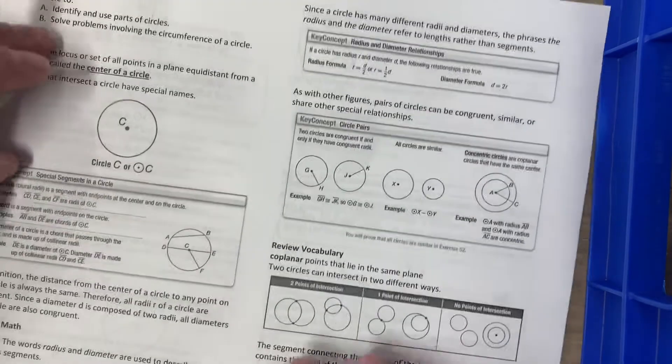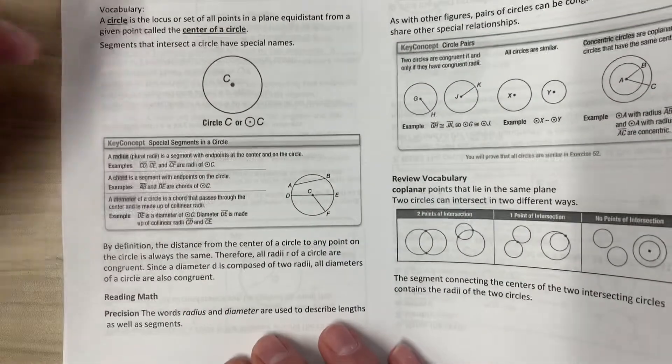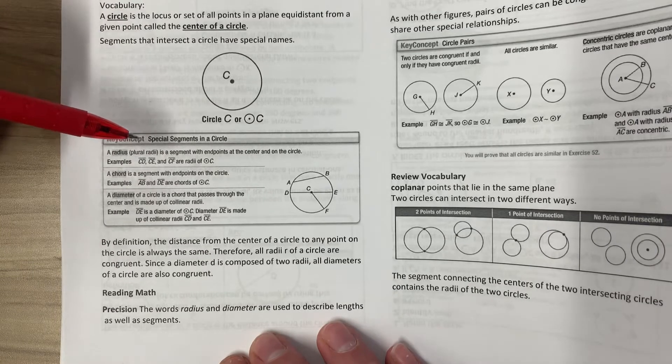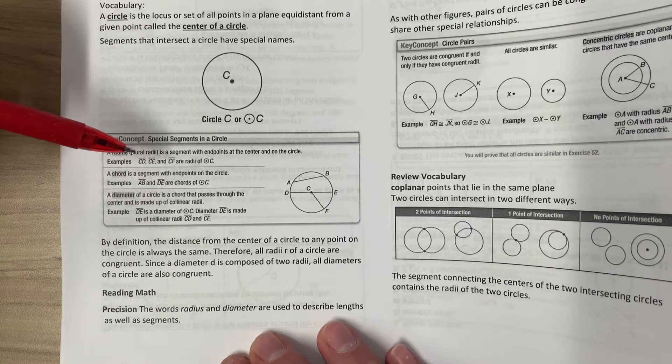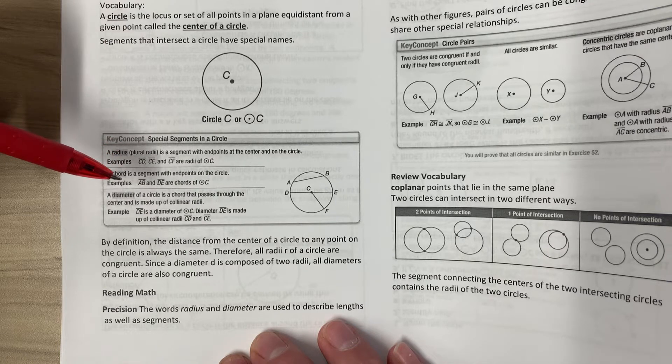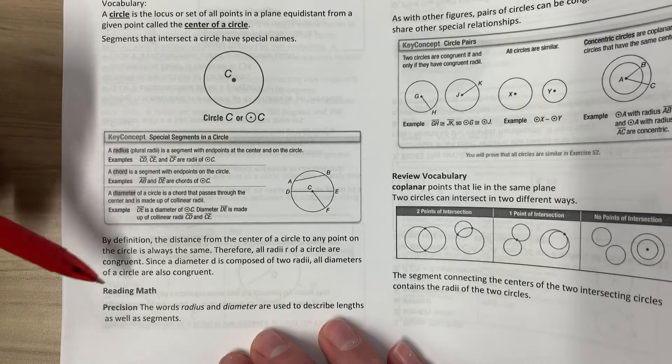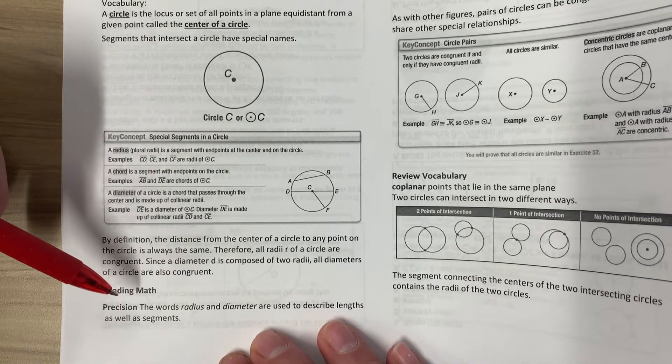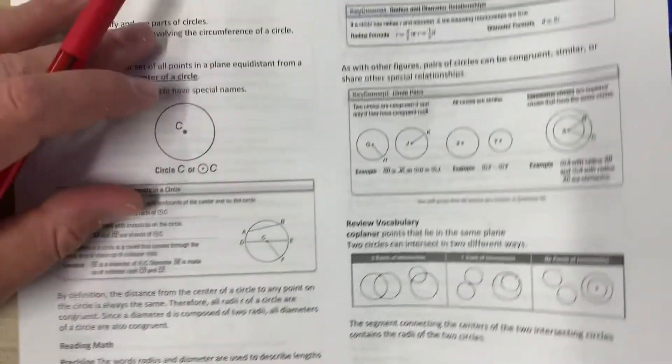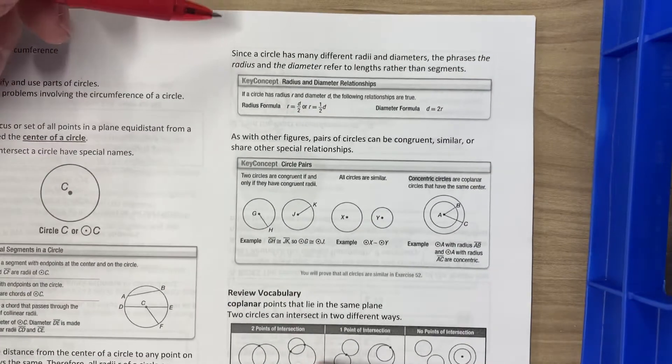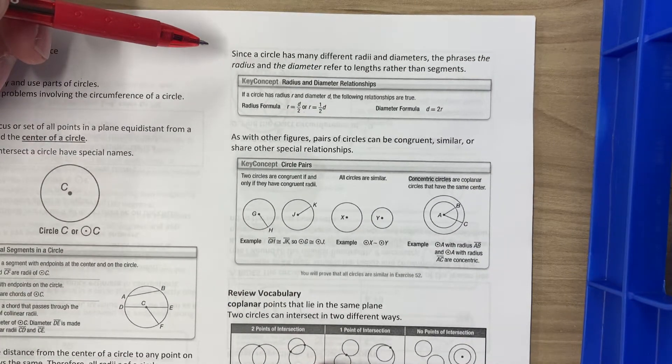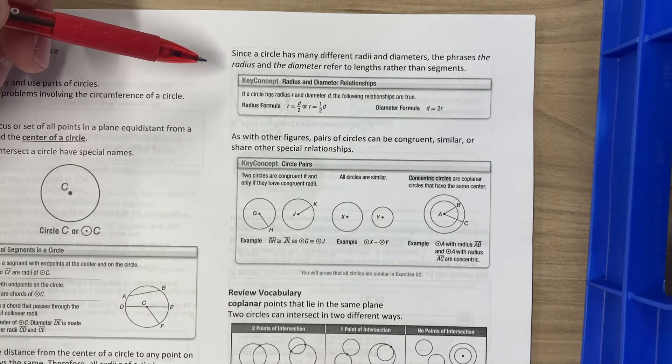By definition, the distance from the center of a circle to any point on the circle is always the same. Therefore, all radii of a circle are congruent. Since the diameter is composed of two radii, all diameters of a circle are also congruent. The words radius and diameter are used to describe lengths as well as segments. Since a circle has many different radii and diameters, the phrase 'the radius' and 'the diameter' refer to the lengths rather than the segments.